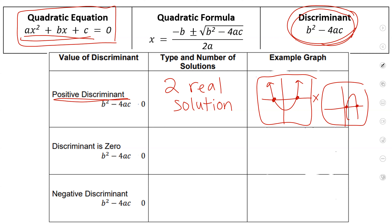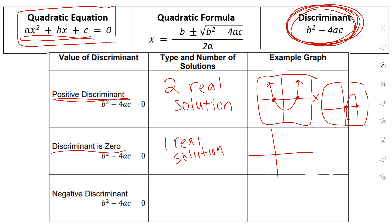If you plug numbers into the formula and you get zero, the discriminant is zero — that means you only have one real solution, meaning you only have one x-intercept. An example might be where it just touches the x-axis one time. If you see a graph that looks like that, the discriminant must have been zero, because you only have one solution, one x-intercept.